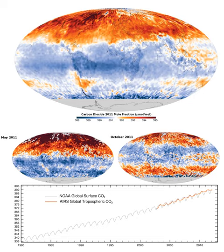However, the two processes take place through a different sequence of chemical reactions and in different cellular compartments. Most organisms that utilize photosynthesis to produce oxygen use visible light to do so, although at least three use shortwave infrared or, more specifically, far-red radiation.